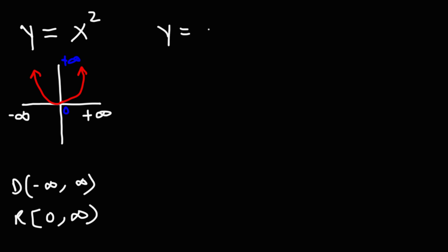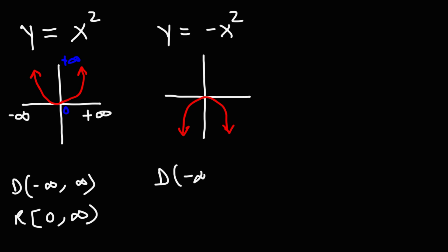Now, what about y is equal to negative x squared? What's the domain and range for that particular quadratic function? For negative x squared, it's going to reflect over the x-axis. The domain is not going to change — it's going to be all real numbers. But the range is going to be different. The lowest y value is negative infinity, the highest y value is 0. So going from low to high, it's going to be from negative infinity to 0, but 0 is included, so we're going to put a bracket at 0.